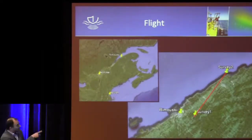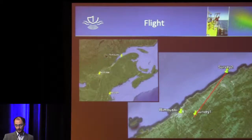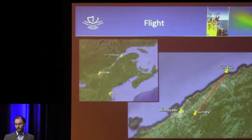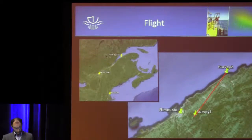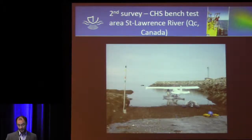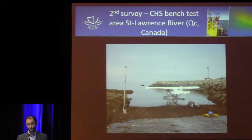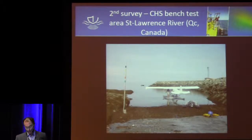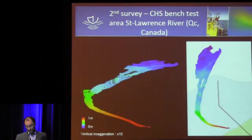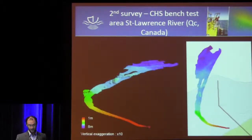Here is Rimouski on the St. Lawrence River. Olivier flew from the survey one area to the survey two area, which is just in front of the CHS Quebec region offices. He had to come to the beach so I could board. We then navigated to the area, deployed the system into the water, and started surveying. This is under the bench test area they use to calibrate their own vessel.